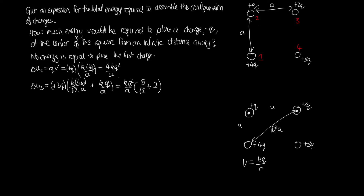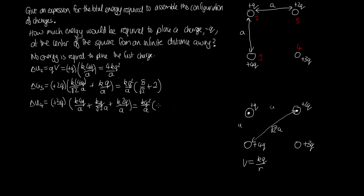Now we place the fourth charge (plus 3q). It experiences the voltage from charge 1 (4q at distance a), charge 2 (q at distance √2·a), and charge 3 (2q at distance a). So U₄ = 3q · [k·4q/a + kq/(√2·a) + k·2q/a]. Pulling out the common factor kq²/a gives U₄ = kq²/a · (12 + 3/√2 + 6).